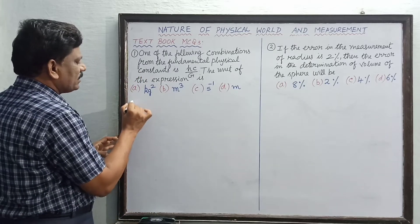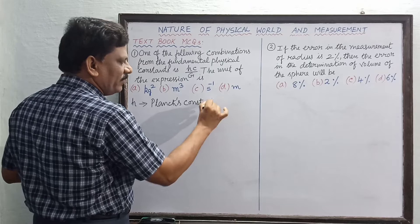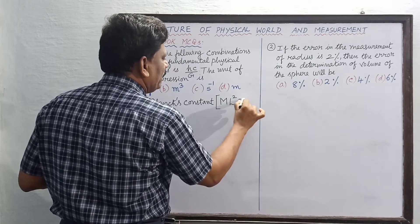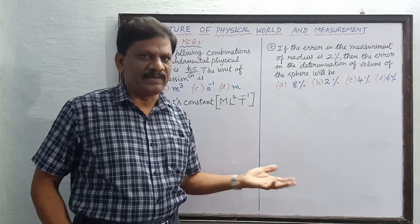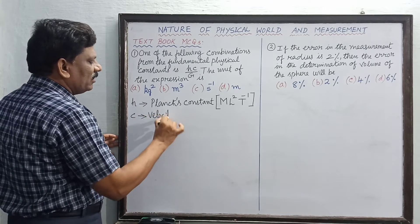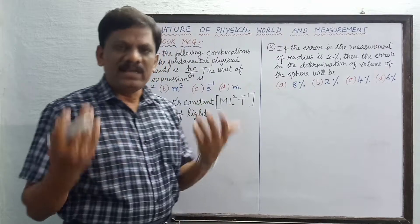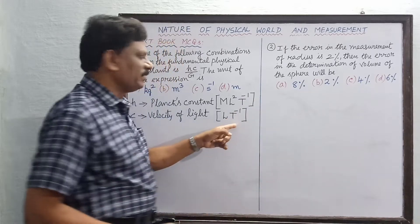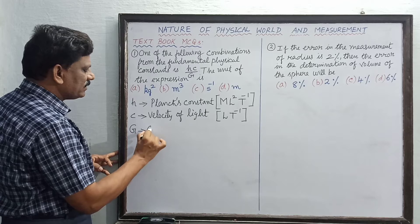Now, h is Planck's constant — Max Planck's constant — and it has the dimensions of energy into time, that is M L² T⁻¹. Next, c is the velocity of light; whether it is the velocity of a car, a person, or light, it has the same dimension: L T⁻¹. Capital G is the universal gravitational constant.